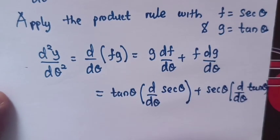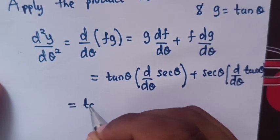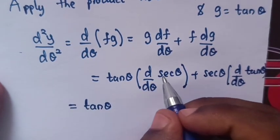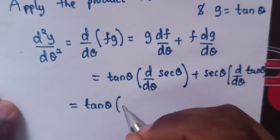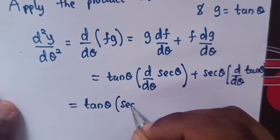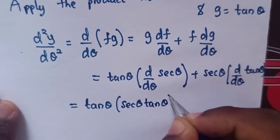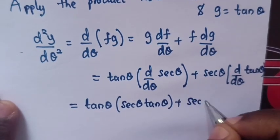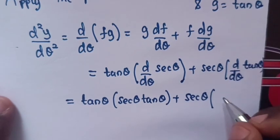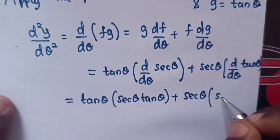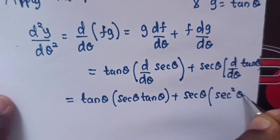This will be equal to tan θ times the derivative of sec θ, which is sec θ tan θ, plus sec θ times the derivative of tan θ with respect to θ, which is sec²θ.